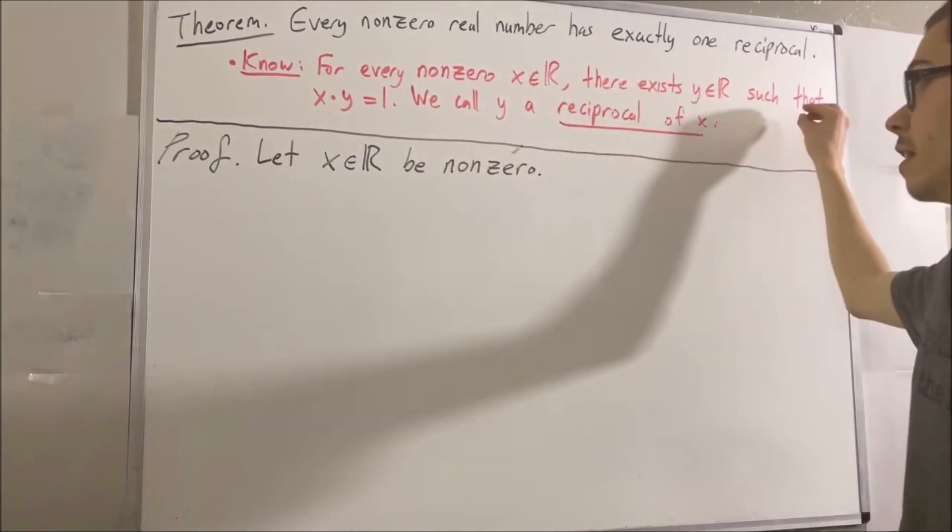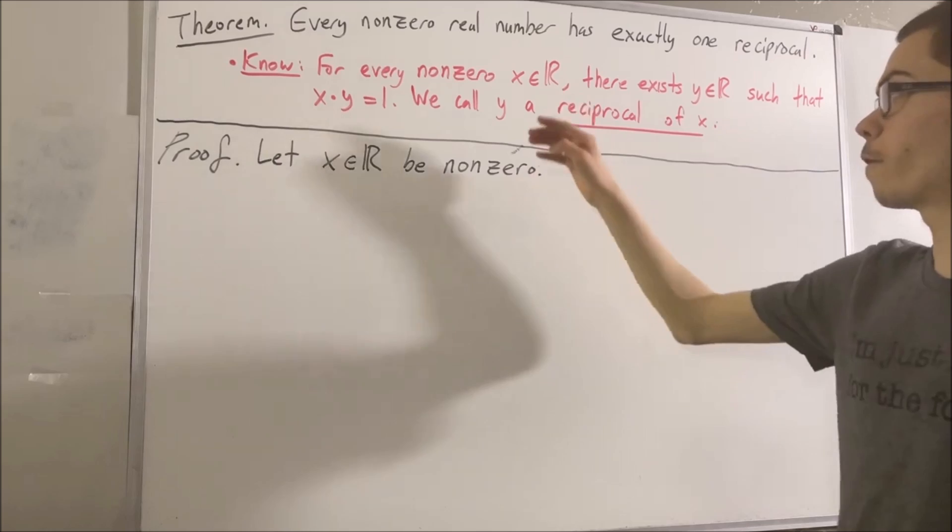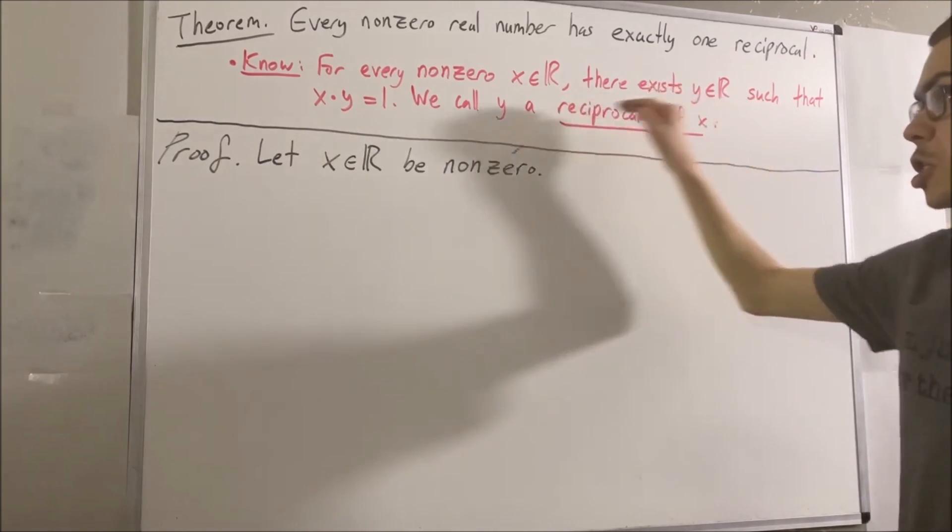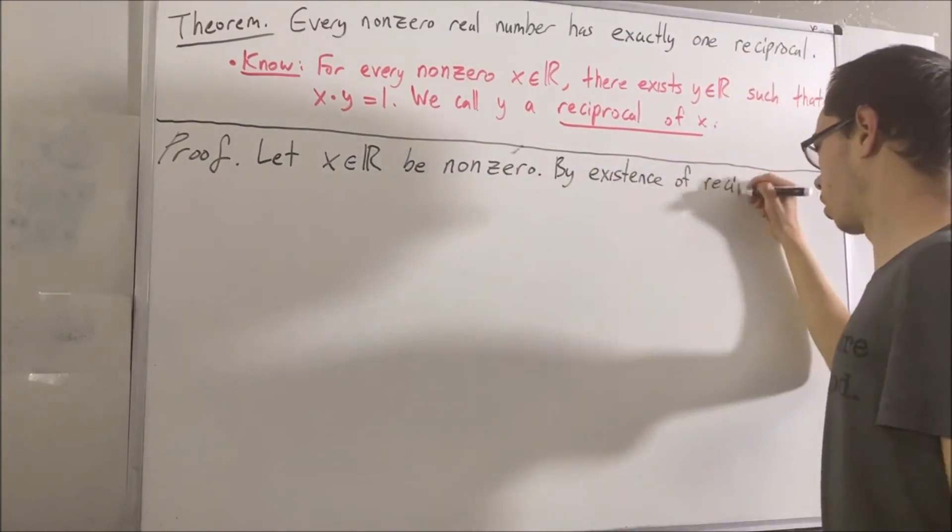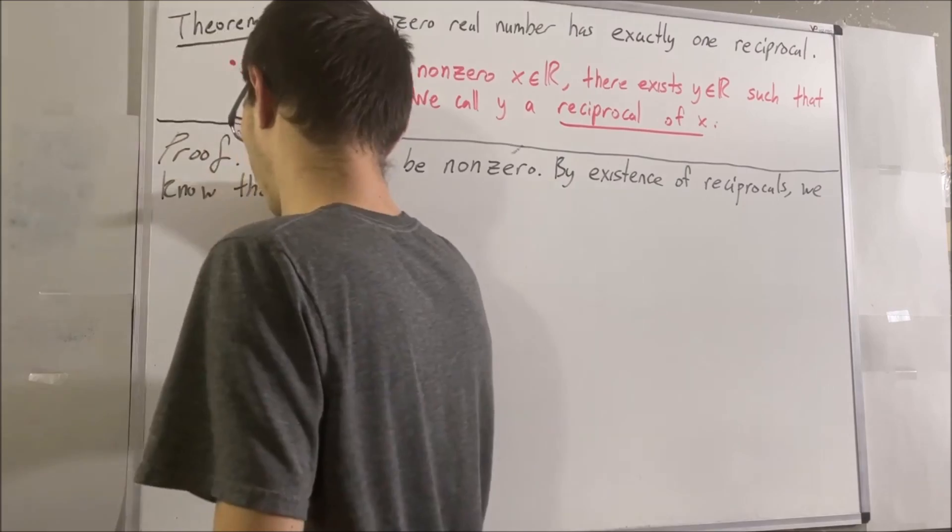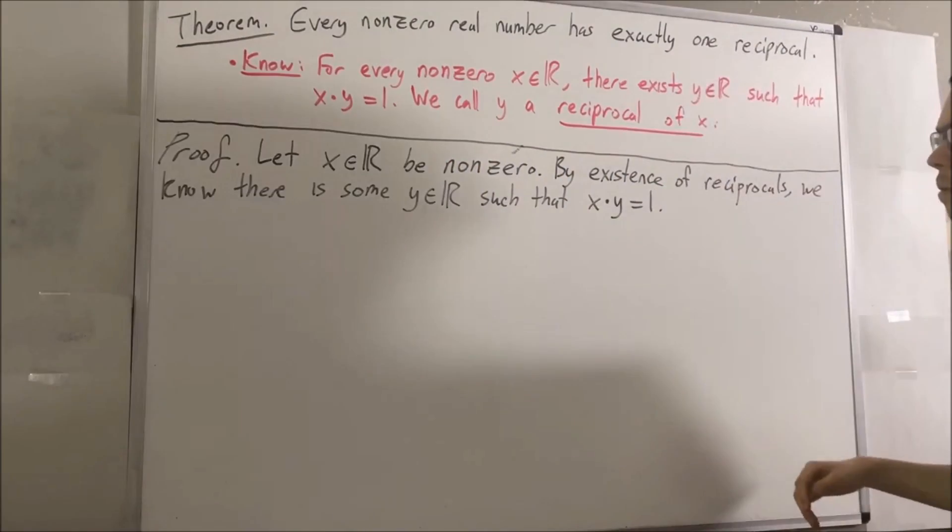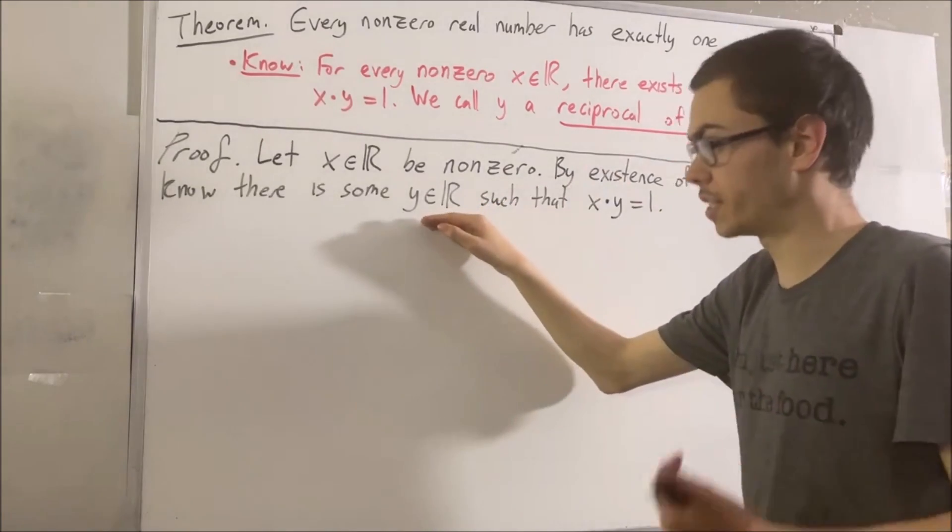Now, we know from this fact that x has at least one reciprocal, right? We know for a fact that there is some real number y such that x times y is equal to 1.